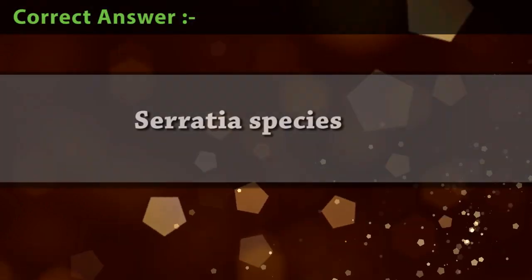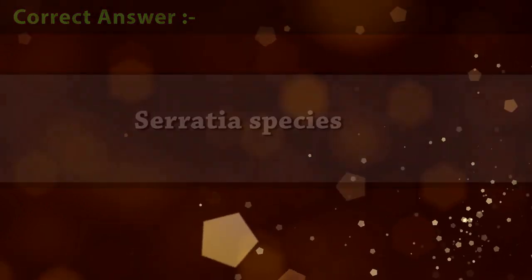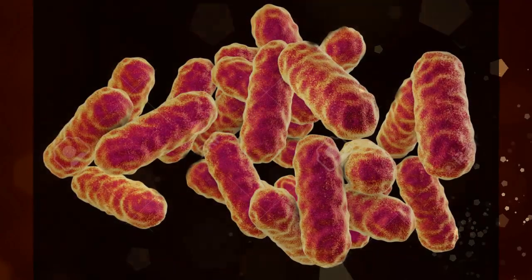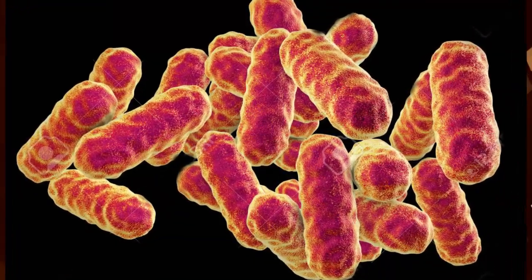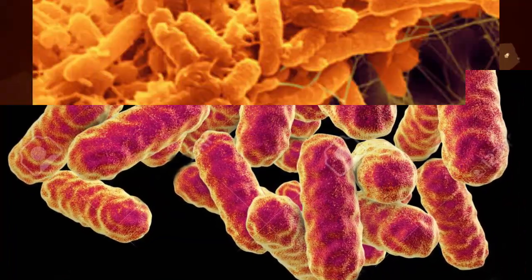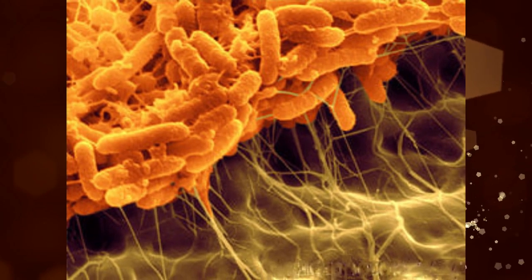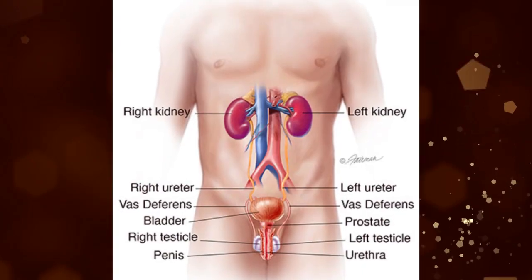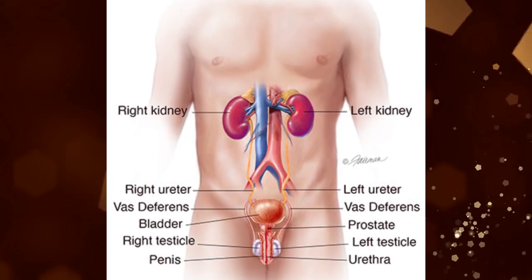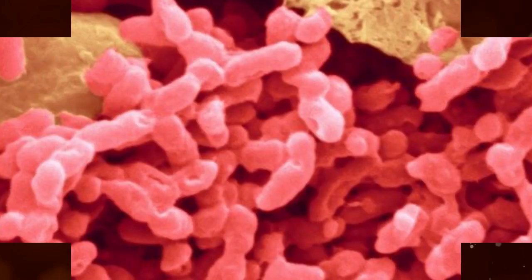The correct answer is Serratia species. Serratia is an opportunistic human pathogen. In the hospital, Serratia species tend to colonize the respiratory and urinary tracts, rather than the gastrointestinal tract, in adults.